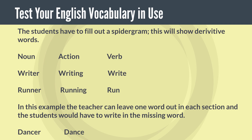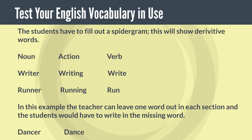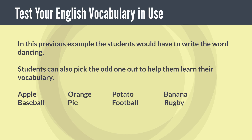Students can also fill out a spidergram, which shows derived forms of words. For example: noun, action verb — writer, writing, write; runner, running, run. The teacher can leave one word out in each section and the students write in the missing word. For instance, given 'dance' and 'dancer,' the students would have to write the word 'dancing.'